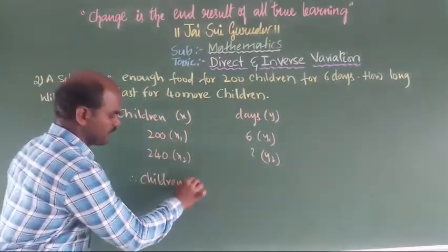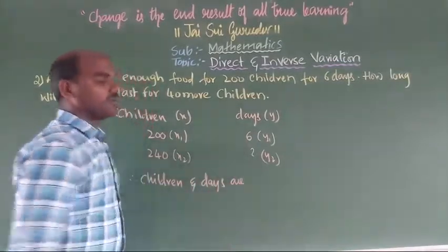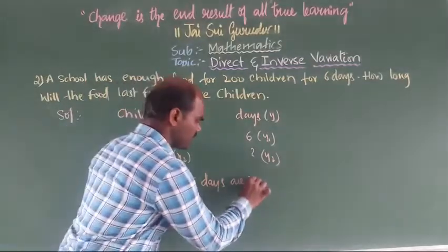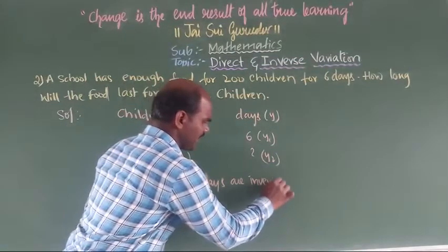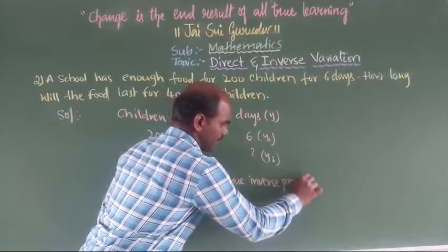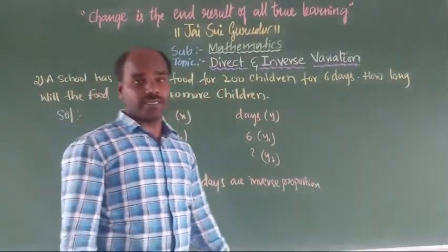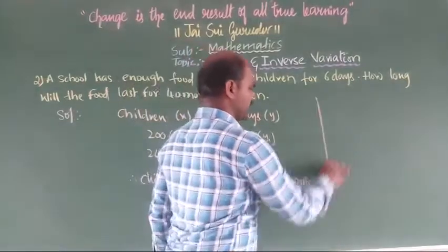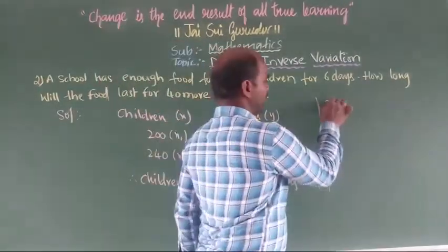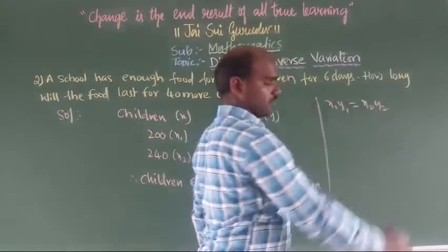Children and days are in inverse variation — inverse proportion. When writing as an inverse proportion, the formula is: x1 × y1 = x2 × y2.